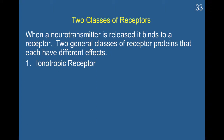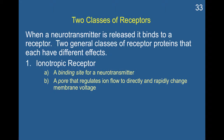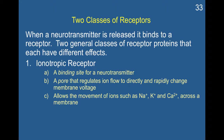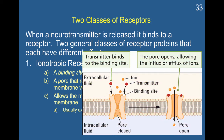You can have an ionotropic receptor, which is the receptor we've primarily been talking about so far. It's a binding site for a neurotransmitter, and this ionotropic receptor becomes a pore that regulates ion flow to directly and rapidly change membrane voltage. This would let in positive ions such as sodium, potassium, and calcium to cross the membrane. It's usually excitatory, and the goal is to trigger an action potential.